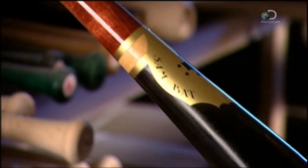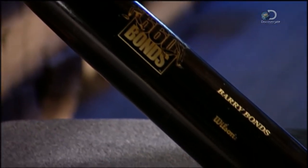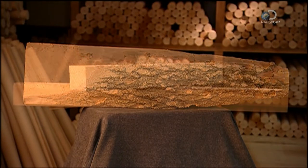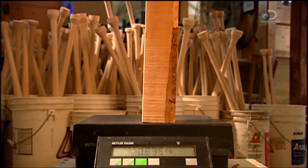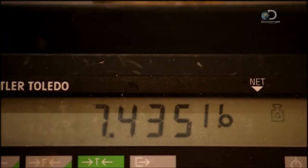Instead of the usual white ash, this bat is made of maple. It's impossible to tell by just looking at it whether a chunk of maple has what it takes to make a good bat. So it's weighed to see if the wood is as thick and heavy as it appears.